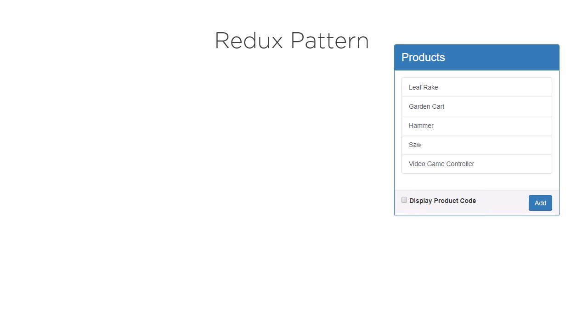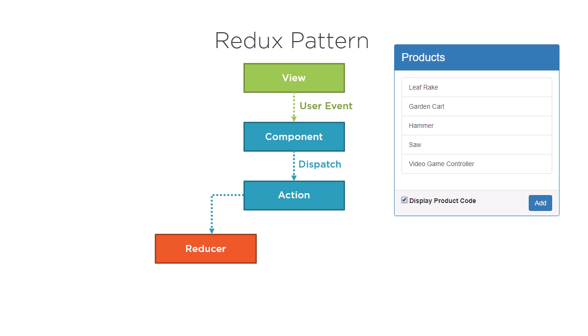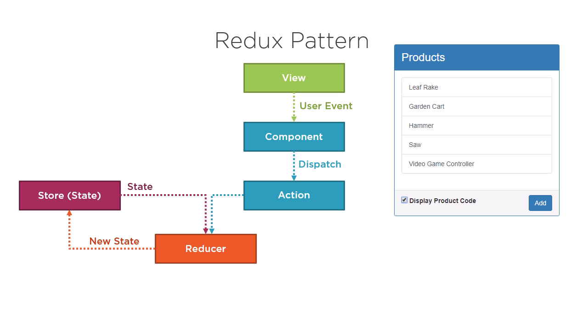Let's see how the Redux pattern can help us. When the user clicks on the checkbox, the view uses event binding to notify the component of the user event. The component then creates an action representing that event and dispatches this action to a dispatcher function called a reducer. The reducer uses the action and the current application state from the NGRX store to define new state and updates the store with that state.